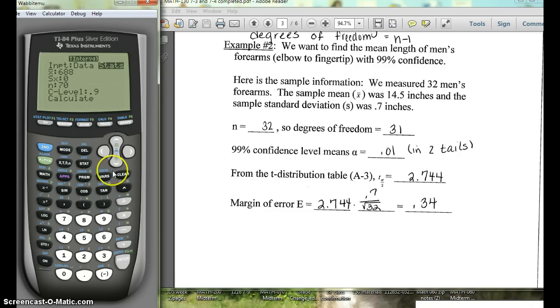We'll put in our mean, which was 14.5. The standard deviation was 0.7. The N is how many you measured, so that's 32. Here we want a 99% confidence level, so we'll put 0.99.